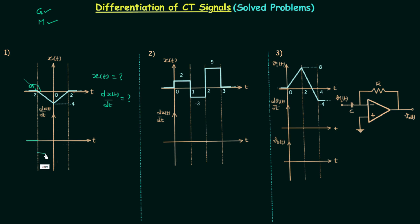So we have minus two from minus two to zero. Now from zero to two there is some slope, and the slope this time is positive. You can extend the line and see that the angle made by the line with the x-axis in the anticlockwise direction is less than 90 degrees, so the slope is positive. The magnitude of the slope is equal to four divided by two — same magnitude as before but the sign is different. From two to infinity the signal is constant, so the slope will be zero.